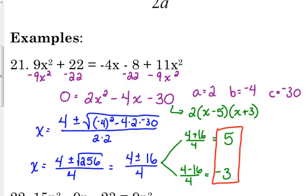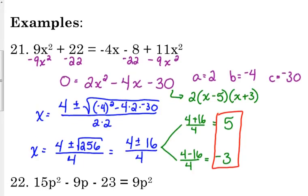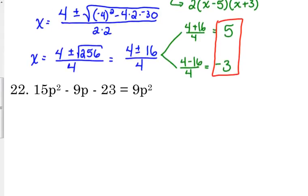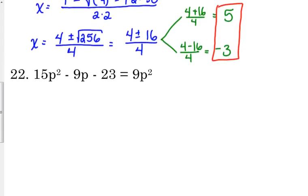If you end up with whole numbers or fractions without square roots, that means your original quadratic was factorable. I didn't put many of those here to practice with, because factoring is quicker than the quadratic formula and you'll likely make fewer mistakes. But I wanted to show the quadratic formula still works even when factoring is possible. Number 22, on the other hand, we cannot factor.